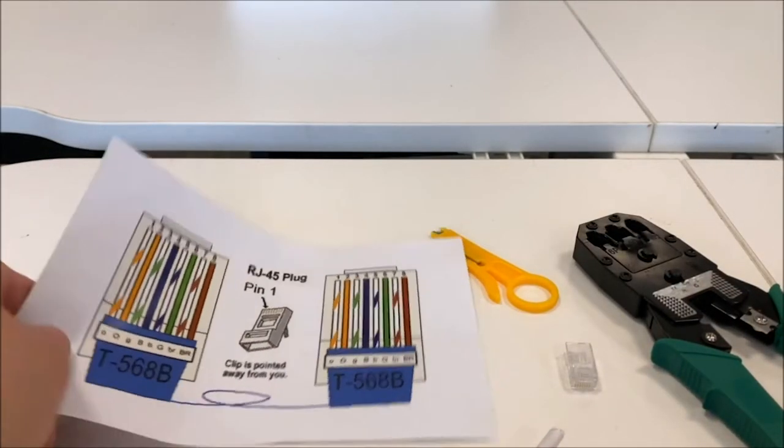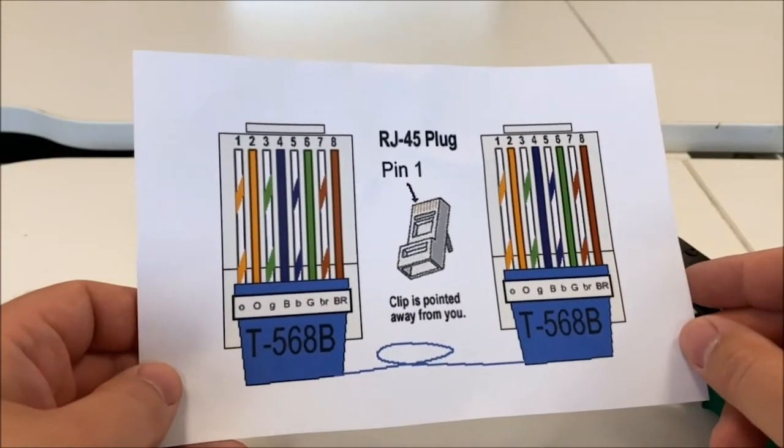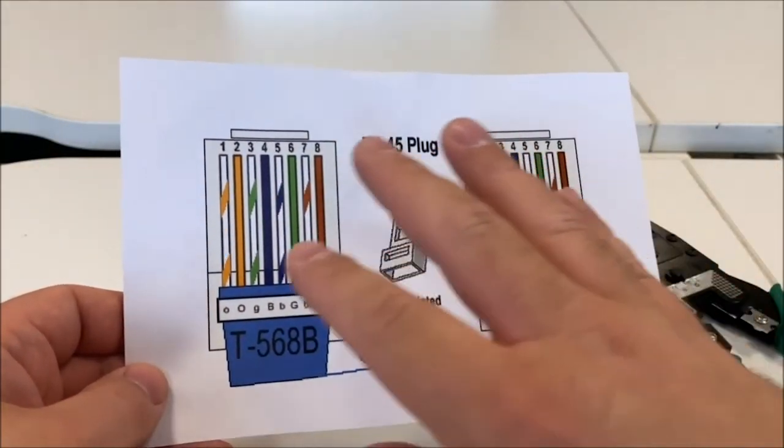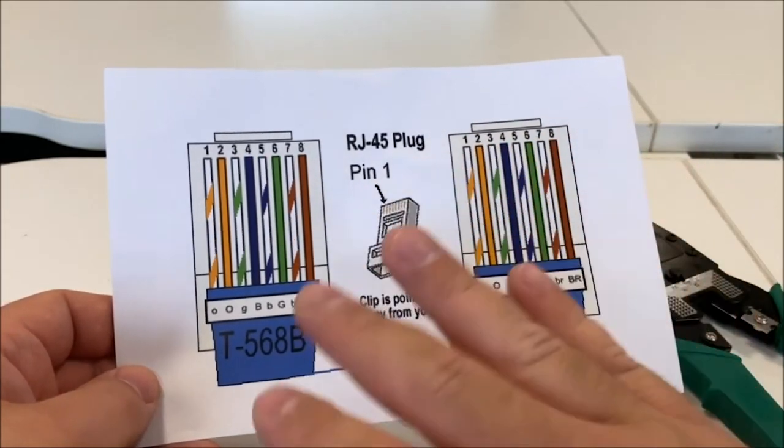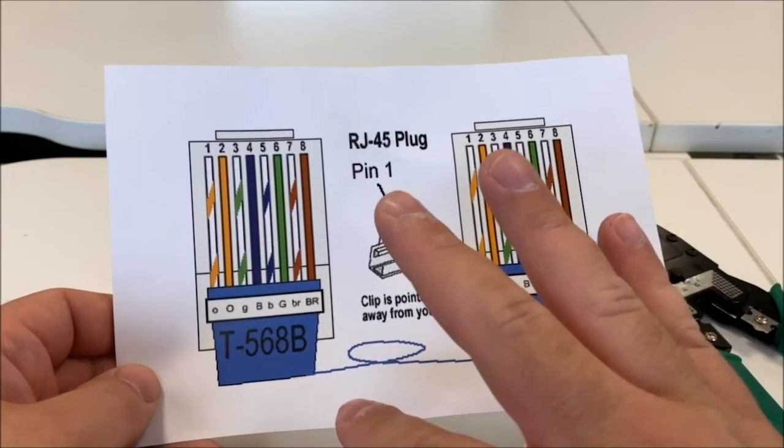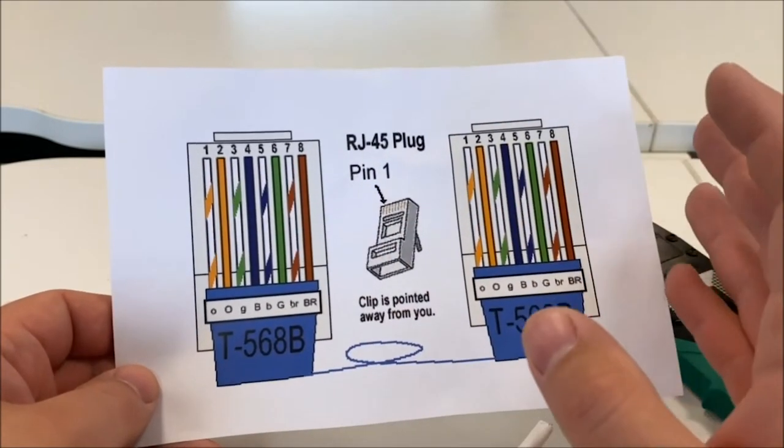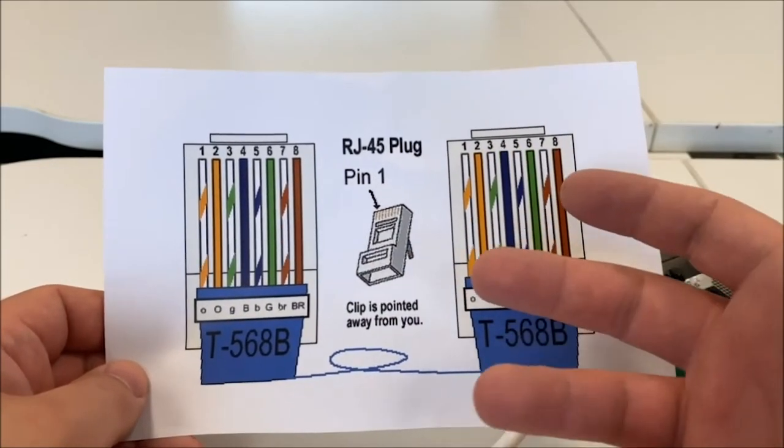So before we start, the diagram here is basically explaining that this is called a straight-through cable. This is normally used to connect different kinds of devices together—so a PC to a switch, or a switch to a router, things like that.